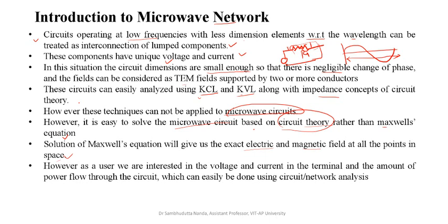As users we are interested in voltage and current — we provide voltage and current to a circuit, not electric and magnetic fields directly. So it is convenient if we can analyze the network using voltage and current at the terminals, which can be done using circuit or network analysis concepts. This is the part where we are going to discuss the microwave network, so that we can analyze microwave circuits using circuit network analysis. Basically, it will be a combination of microwave theory and circuit theory.